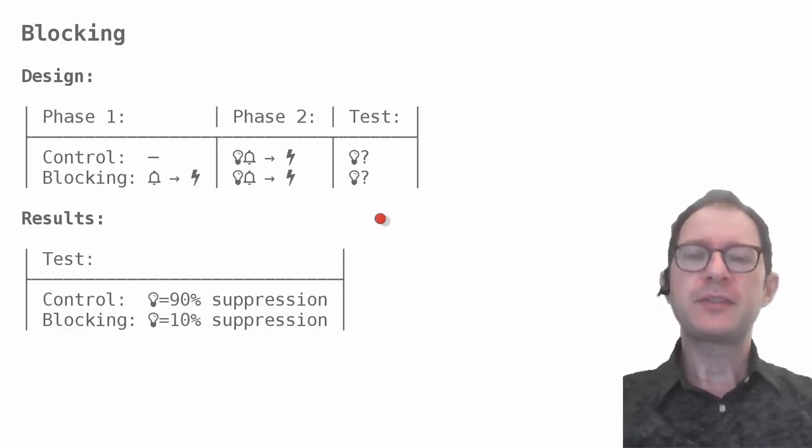Why is this a surprising result? Note that the light has been followed by the shock exactly the same number of times in both the control and the blocking group. If reinforcement with the shock were everything that matters, the two groups would have become equally afraid of the light. Of course, one difference between the two groups is that animals in the blocking group were already afraid of the sound at the time that the light was introduced.